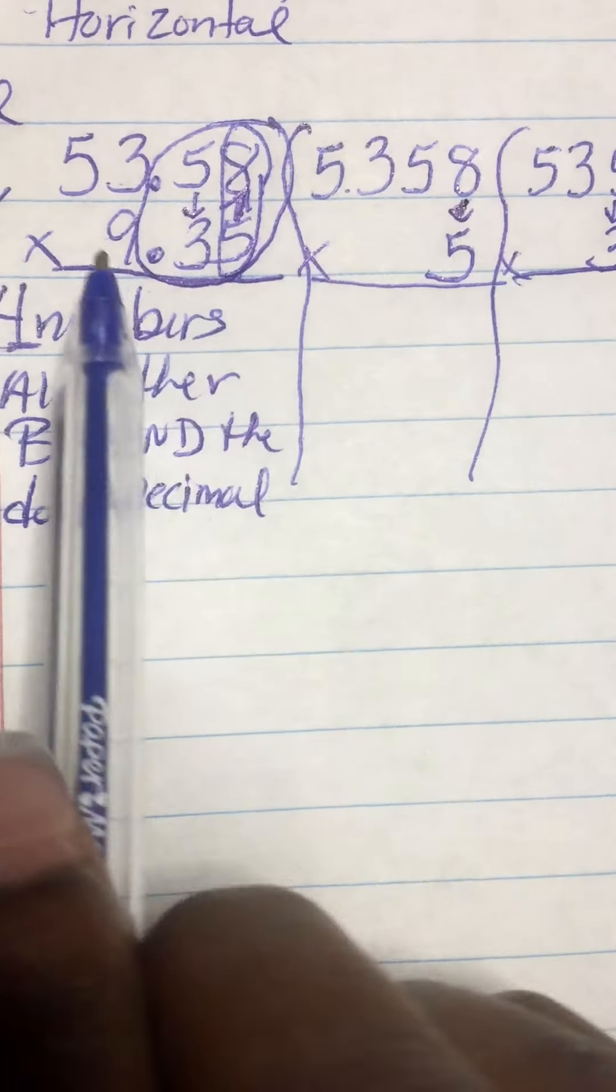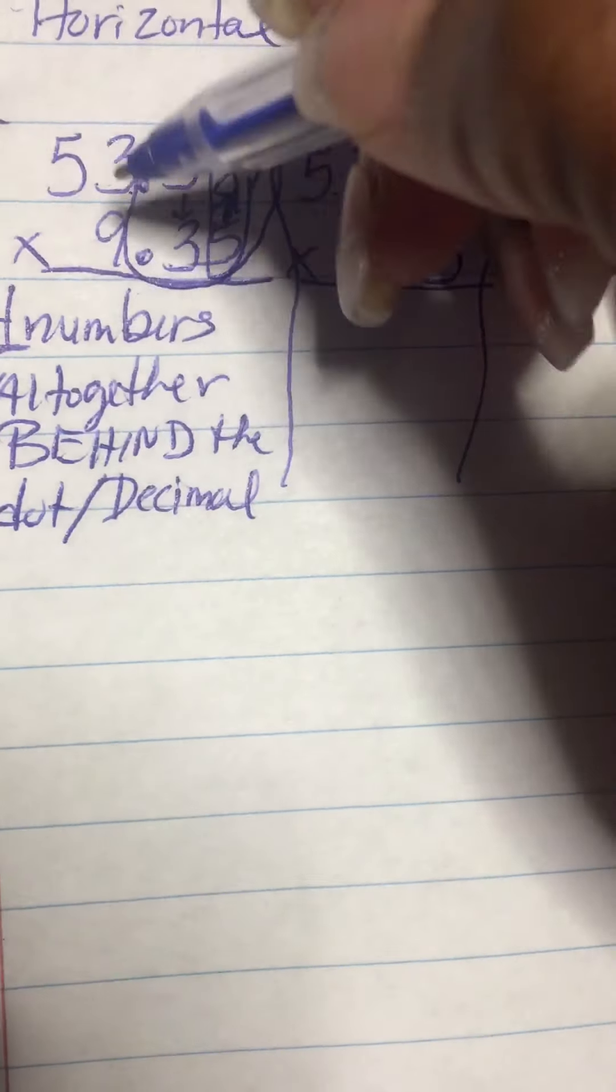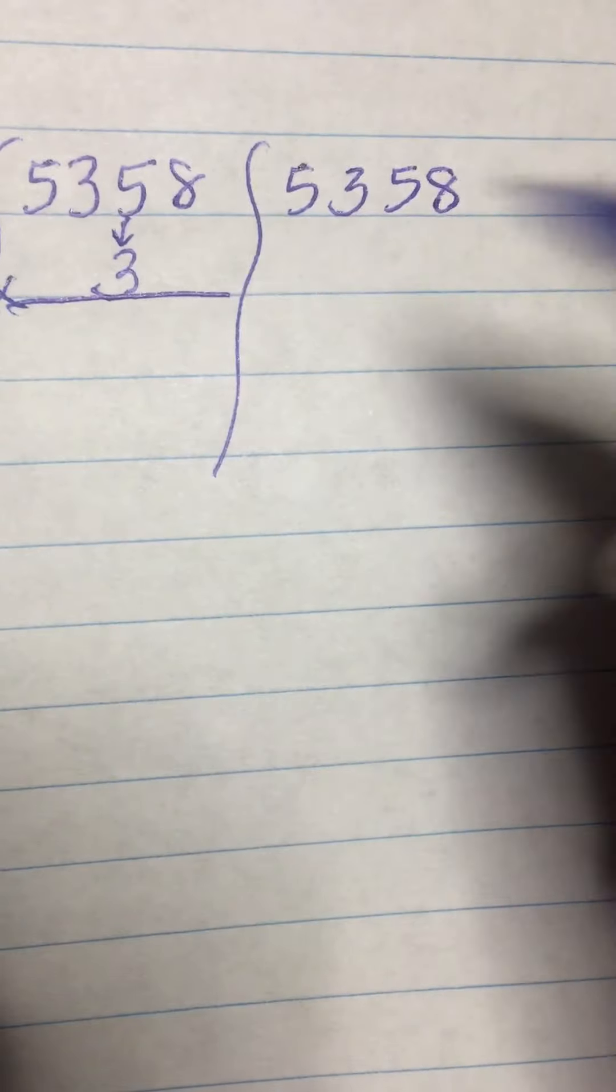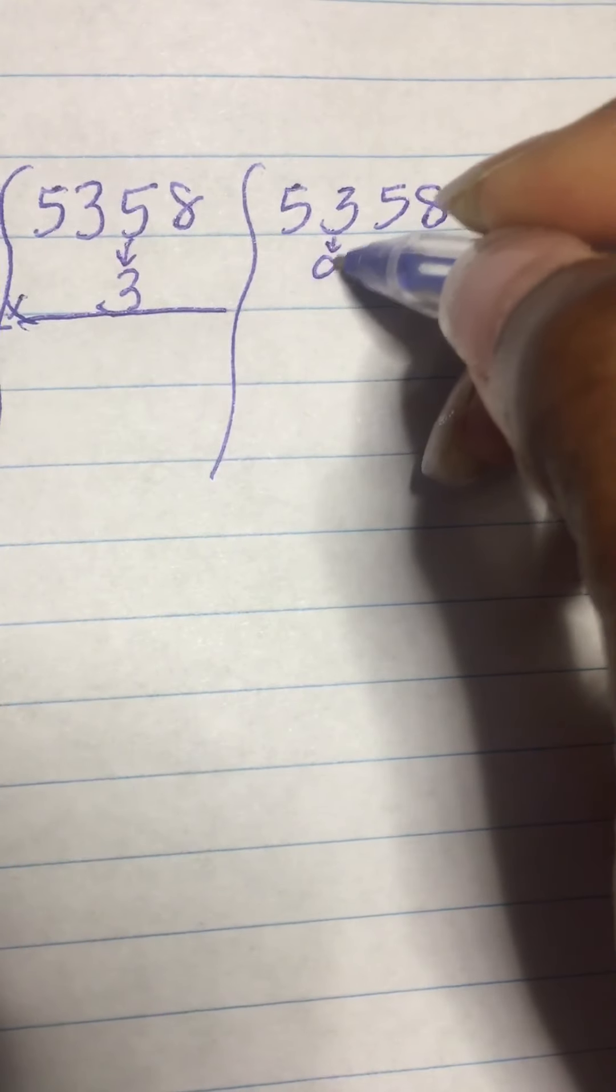Now, then I see here that a nine is underneath the three. So, I'm going to go over to my last column and make sure that I write a nine under the three.